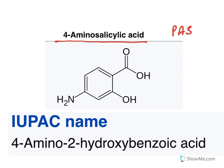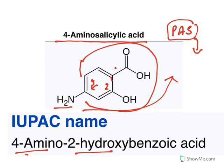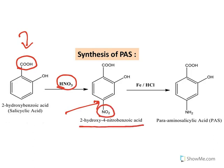Para-amino salicylic acid (PAS): salicylic acid has a carboxylic acid and hydroxy group in adjacent positions on the benzene ring; an amine group at the para position gives para-amino salicylic acid. The IUPAC name is 4-amino-2-hydroxybenzoic acid. PAS inhibits folic acid synthesis. Synthesis starts with salicylic acid, which is nitrated with nitric acid at the para position (a para-directing group), giving 2-hydroxy-4-nitrobenzoic acid. Reduction with iron and hydrochloric acid then gives para-amino salicylic acid.